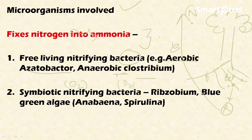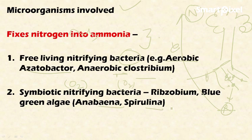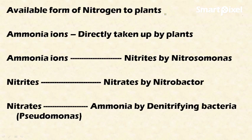Leguminous plants have roots containing root nodules, and within these root nodules Rhizobium is present. Rhizobium fixes atmospheric elemental nitrogen into ammonia, allowing plants to take up nitrogen in the form of ammonia. This is called symbiosis because both Rhizobium and the plant benefit from this interaction. Other symbiotic nitrifying bacteria include blue-green algae and anaerobic Spirularia.